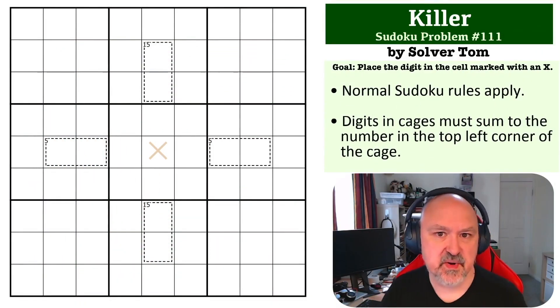Hey, this is Bremster and this is puzzle 111 in the Sudoku Problem series. This is a killer problem submitted by Solver Tom, and this one is pretty easy. The goal is to place the digit in the cell marked with an X.